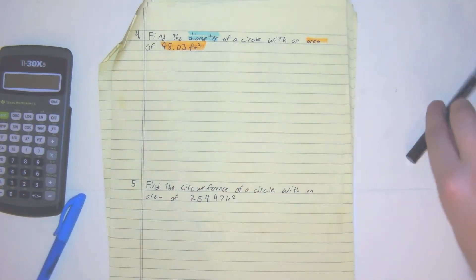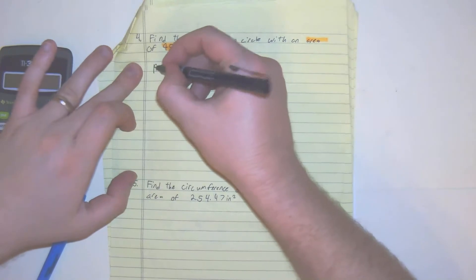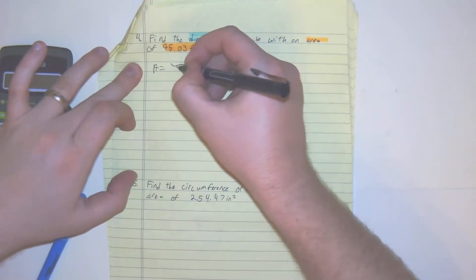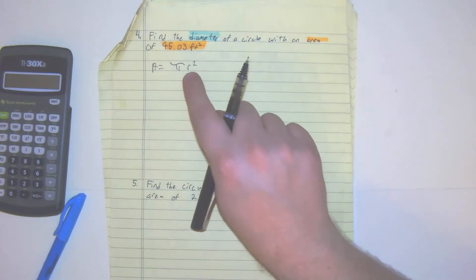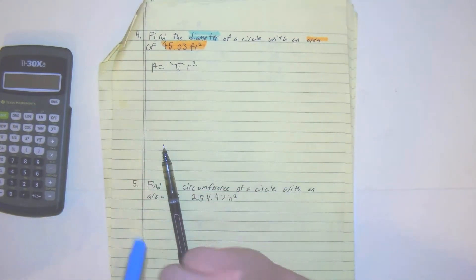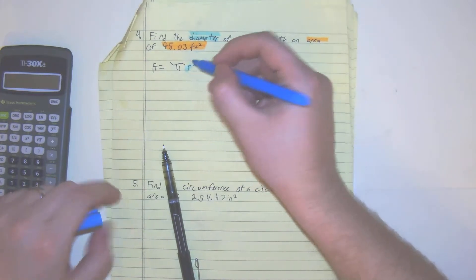So remember area is defined by pi r squared. Unlike the last problem, we're not able to get diameter right away. So in order to get the diameter, we do have to use the radius.